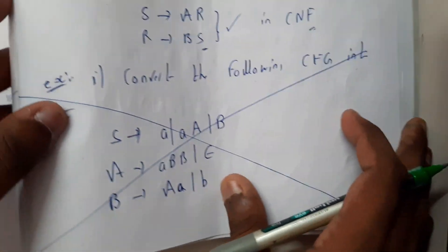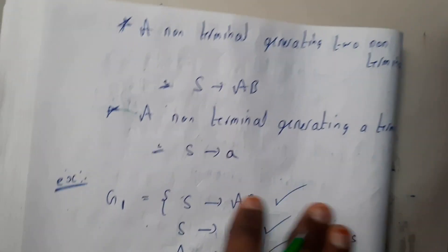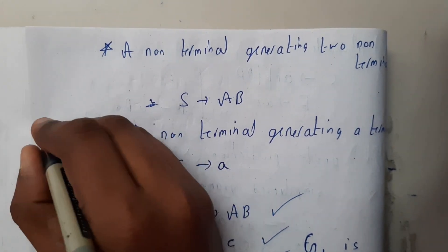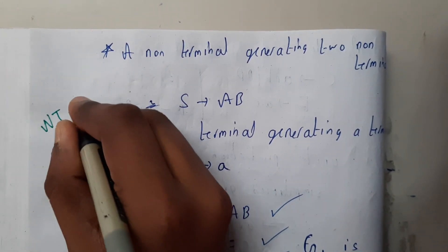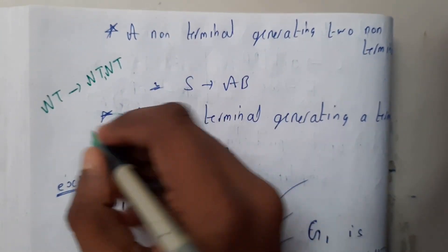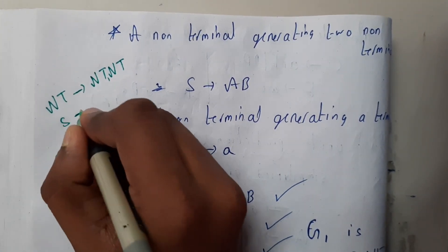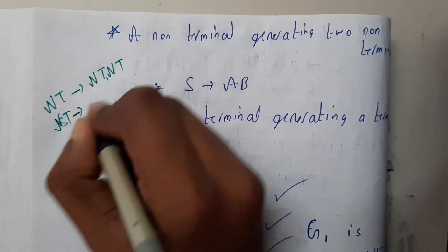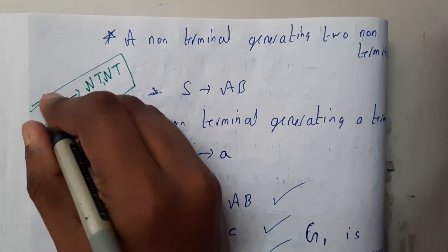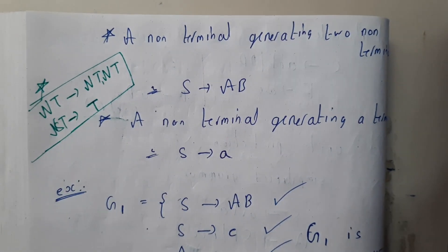Basically, it should follow these two main rules. A non-terminal should produce two non-terminals, or a non-terminal should produce a single terminal. These two are the conditions for Chomsky normal form.